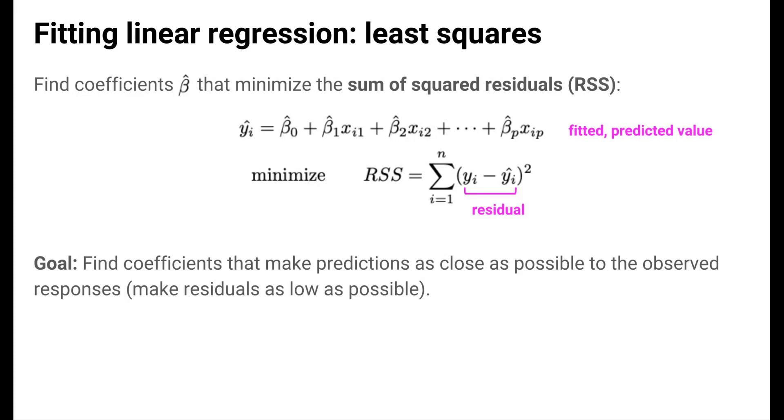The residual is the observed response minus the predicted value, and the sum of squared residuals quantity that we aim to minimize is the sum shown here. We take each residual, square it, and add up all of these squared residuals. The goal is to find coefficients that make our predictions as close as possible to the observed responses. In other words, to make the residuals as low as possible.